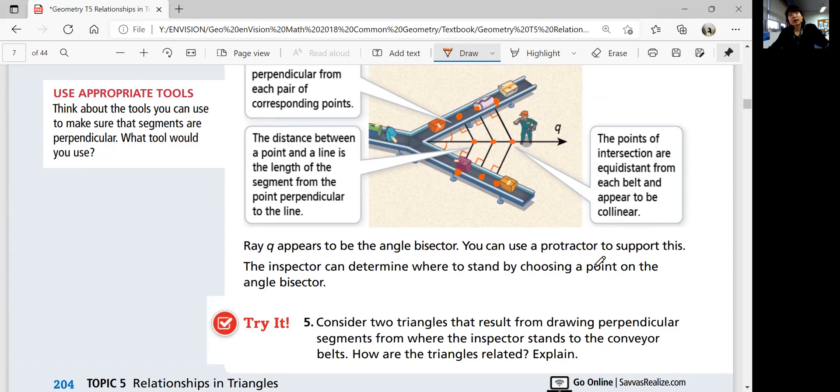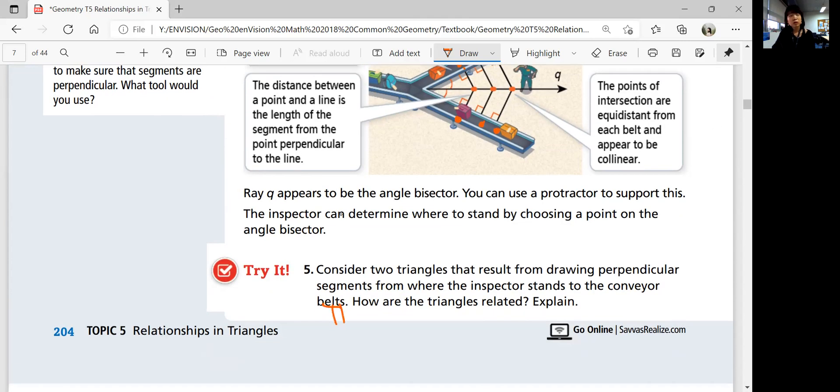So consider two triangles that result from drawn perpendicular segments from where the inspector stands. So we got two triangles over here, another triangle over here. They're very proportional. How are the triangles related? They look the same, but how are they related? They're congruent by AAX theorem because the two corresponding points will always be equidistant from the vertex of the angle. They are congruent by AAX theorem.